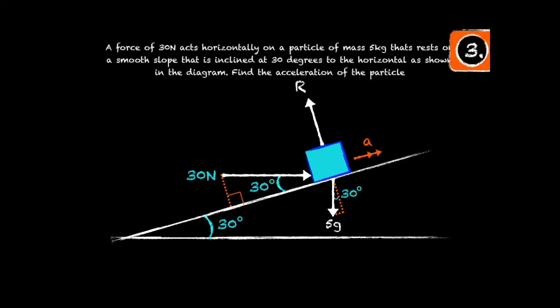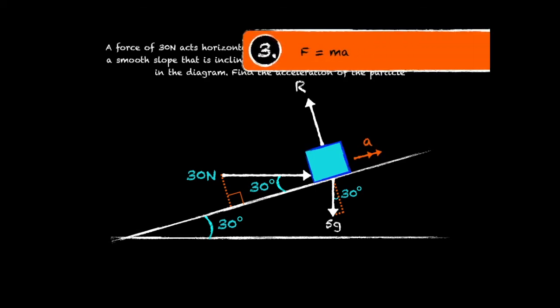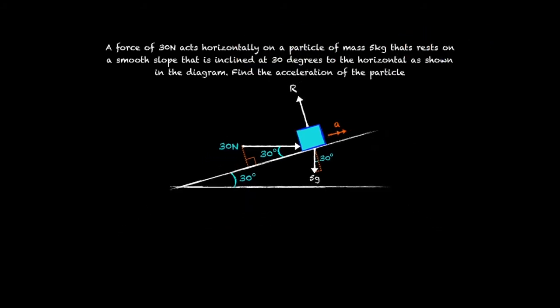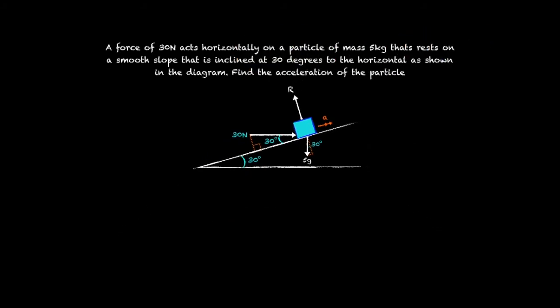And our final step is to use the equation F equals MA to determine the acceleration of the particle. In this case we only need to use F equals MA going parallel to the slope. And so F is the resultant force and that's equal to 30 cosine 30 going up the slope minus 5g sine 30 from the weight going down the slope.